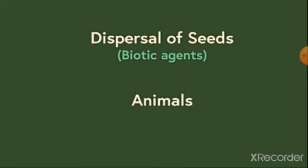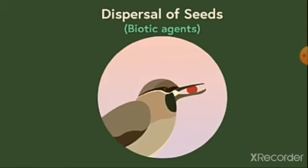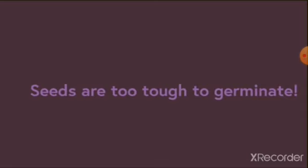Plants are even benefited with seed dispersal by animals. To understand this, let's take the simple example of birds. Birds also relish juicy fruits that have seeds within. In many cases, seeds of the plants are too tough to germinate if planted directly to the soil.